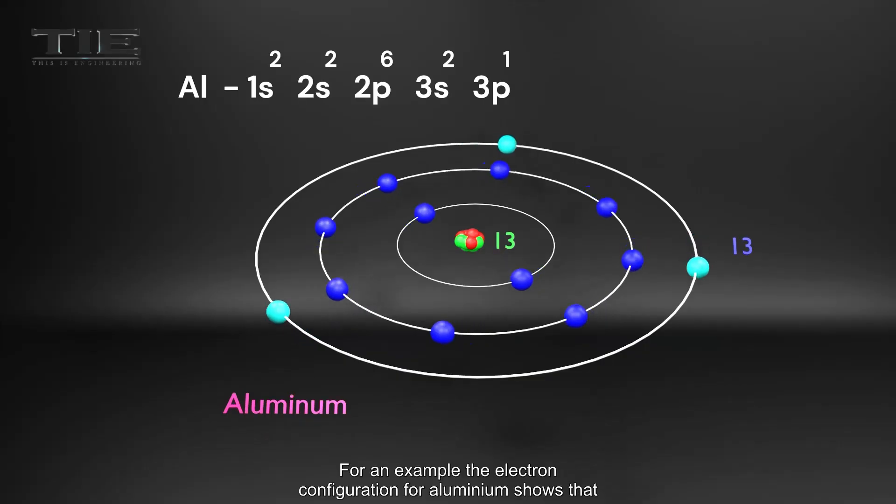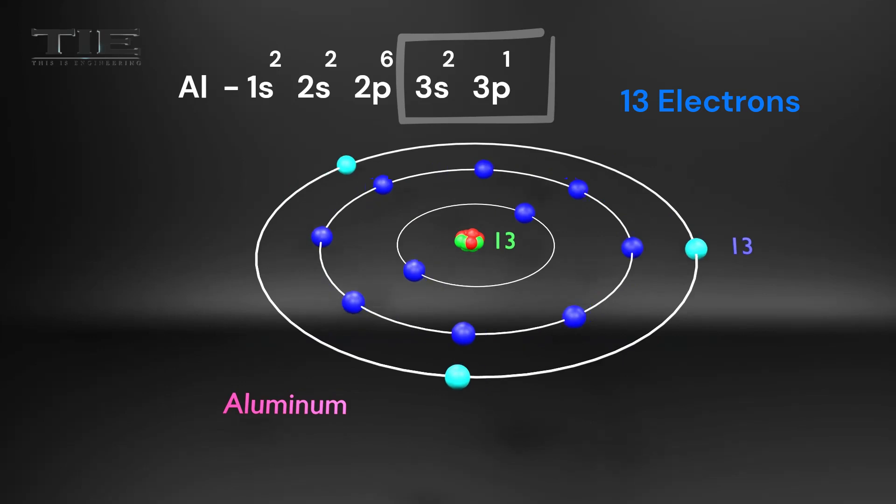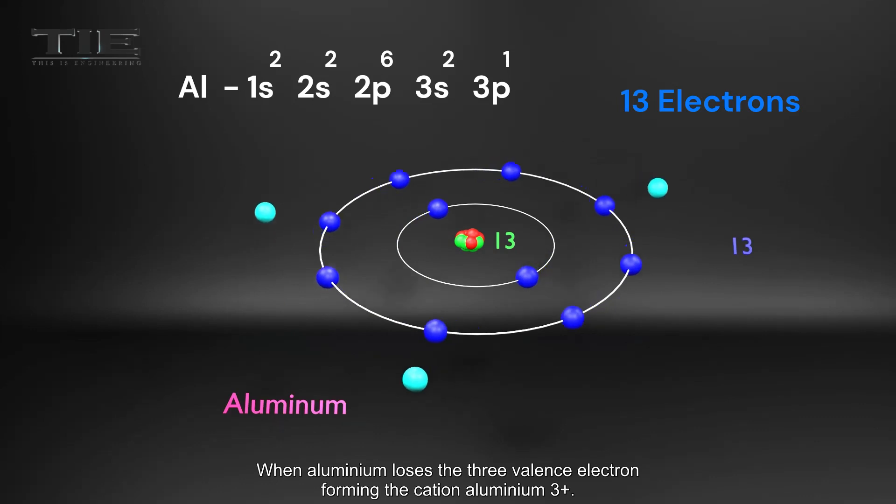For an example, the electron configuration for aluminum shows that there are totally 13 electrons, and it has 3 valence electrons in the third energy level. The two electrons are in s orbital and one is in p orbital. So it can lose 3 electrons. When aluminum loses the 3 valence electrons, forming the cation aluminum 3 plus.